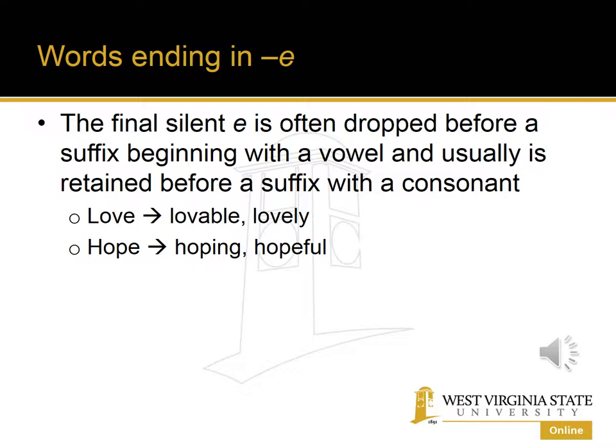So when we add the suffix -able to make the adjective lovable, the E is dropped. But when we add -ly to make love into the adverb lovely, because the suffix starts with a consonant, we don't drop the final E. Same thing with hope.